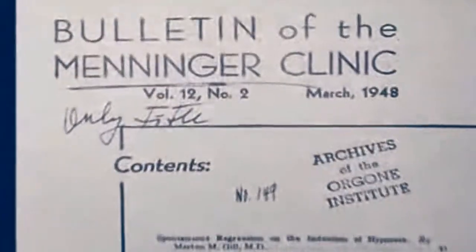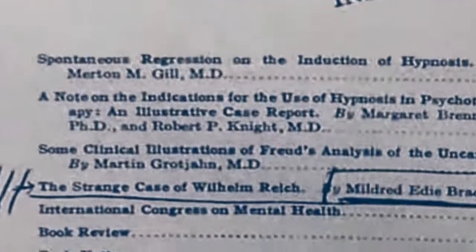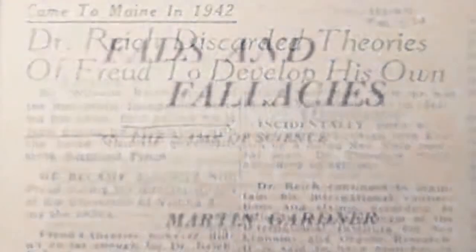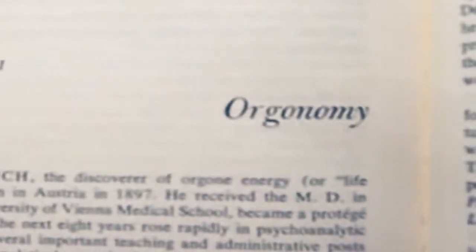They slandered his early research on human sexuality, called the orgone accumulator a 'sex box,' and subjected Dr. Reich and his associates to character assassination and slander. His work and ideas were chronically misrepresented in newspaper and magazine smear articles with fraudulent information and outright lies, and without investigating his work in any serious manner, the medical establishment encouraged the U.S. Food and Drug Administration to seek and obtain a court injunction to stop Dr. Reich's research, writing, and speaking about his discovery.